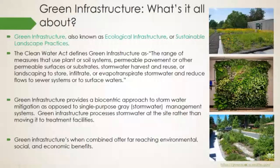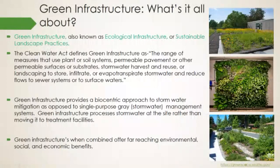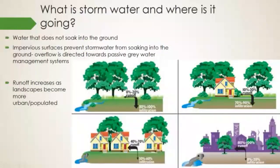When green infrastructure such as green roofs, rain gardens, and permeable pavement systems are used in combination in urban areas, they can have a wide range of positive impacts on the environment, social and public well-being, and even economies. Here we see a green roof, a green wall, and what would be a rain garden or bioswale.